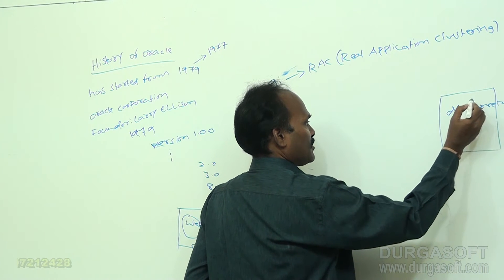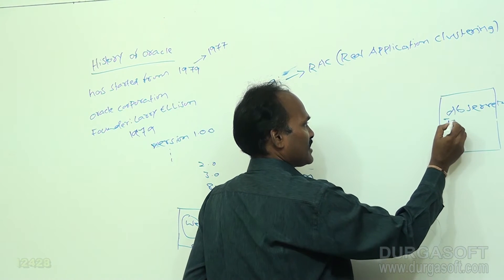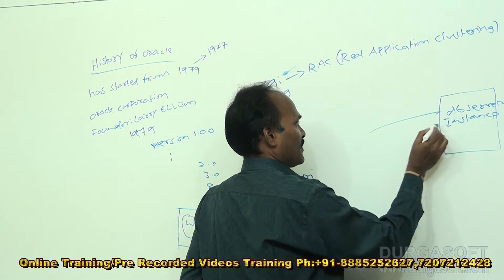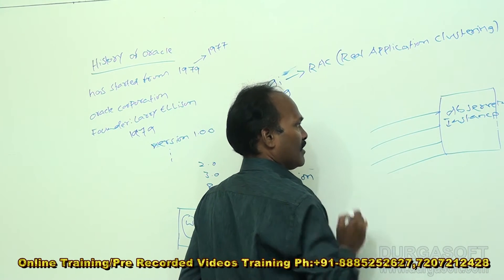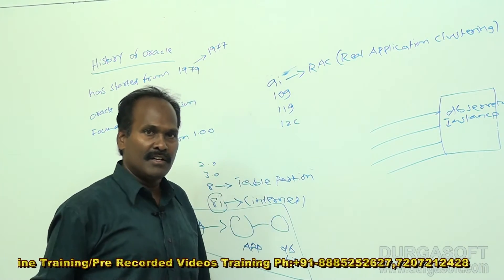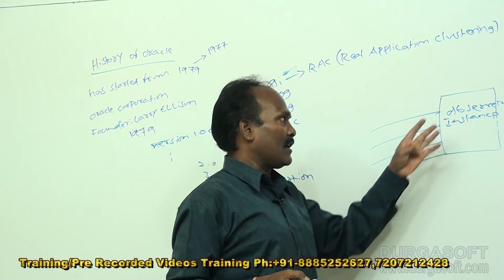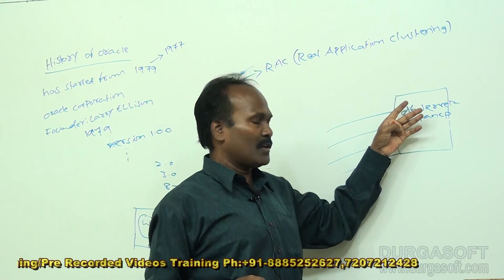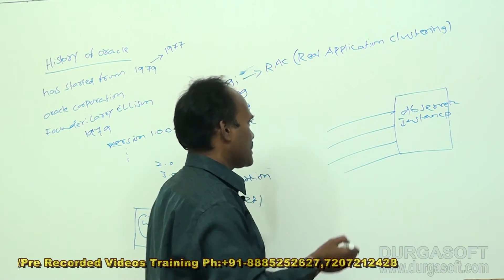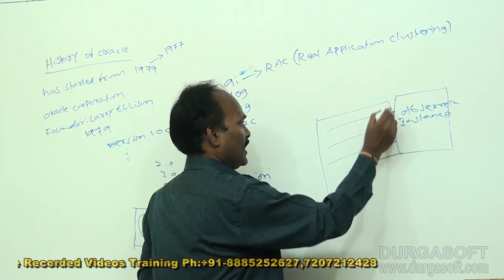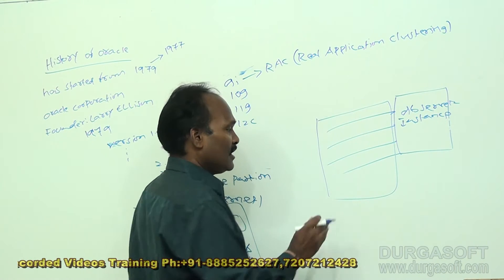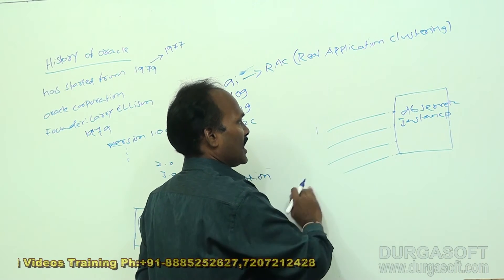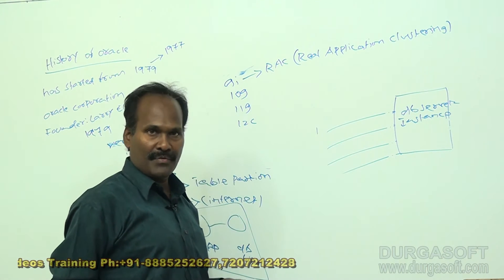This single database server instance had lakhs of clients connected to it. Whenever there was a failure of the database server, automatically all clients would go down. This kind of failure is called a single point of failure.